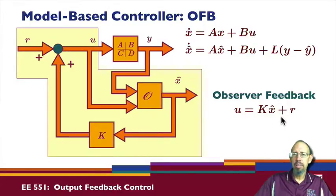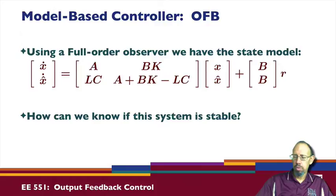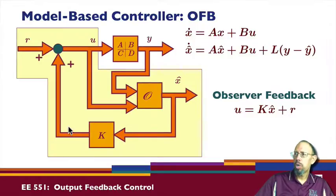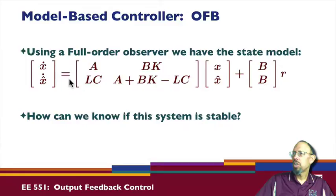The question now is: we're saying the estimates are good and can be used in state feedback — how does that actually work? When we take this state model and apply it, we form the overall closed-loop system. I'm going to have x and x-hat as my states, and combining these two systems — where K is a constant gain — we find an overall state model.